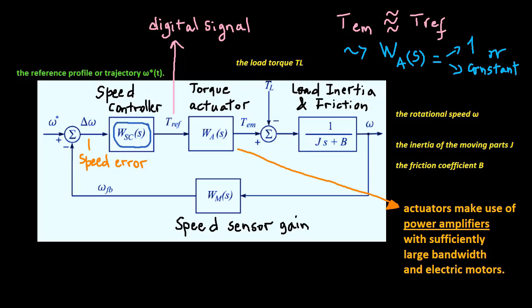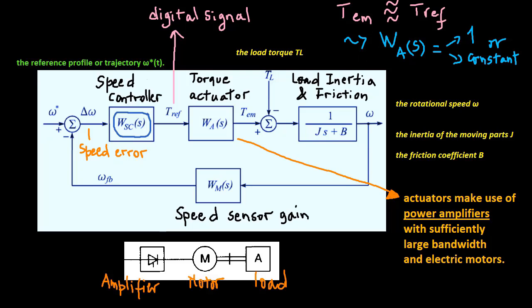Most actuators make use of power amplifiers with sufficiently large bandwidth and electric motors. The power amplifier supplies the motor windings with appropriate voltages and currents, thus enabling the motor to generate the desired driving torque TM at its output shaft. The motor shaft is coupled to the load, either directly or through a mechanical transducer that may convert the rotation into translation, thus providing the driving force instead of the driving torque.